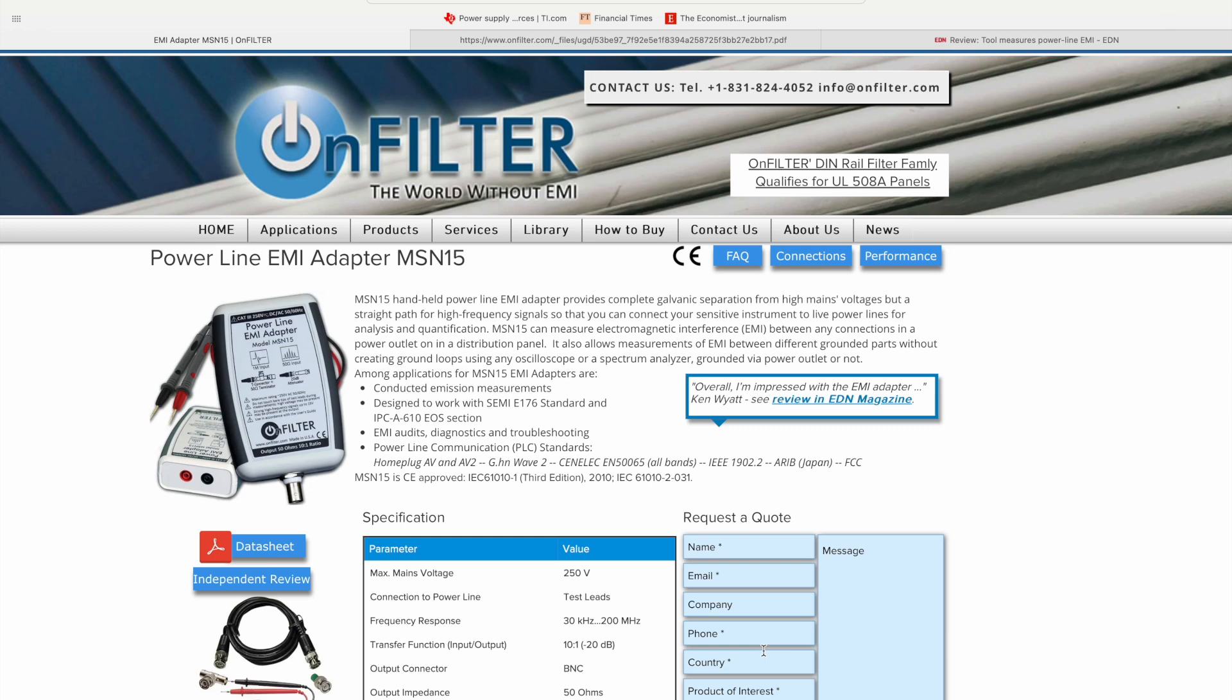Hello everyone, in today's session we're going to introduce a very useful tool that you can use to measure the conducting emission and also the transient events on power lines. The tool we're going to introduce is from this company called Unfilter. It's called Powerline EMI adapter, model type MSN15.